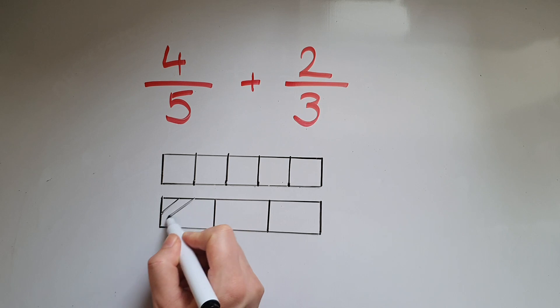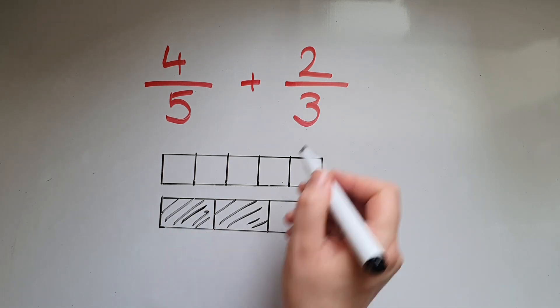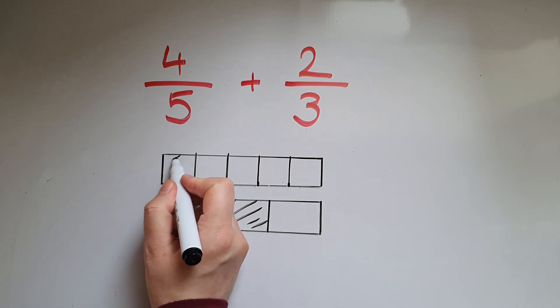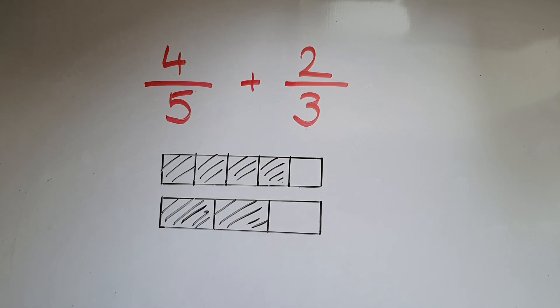So here is 2 out of 3, two thirds, this one, and 4 out of 5, four fifths, this fraction.